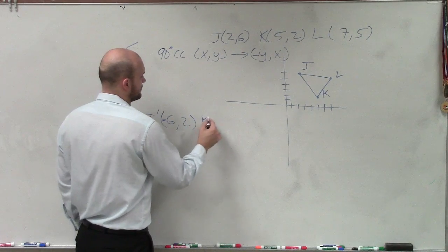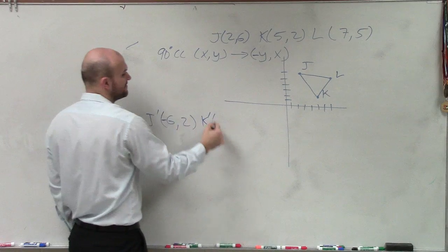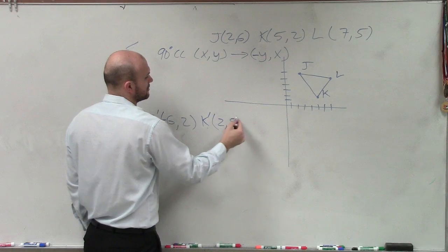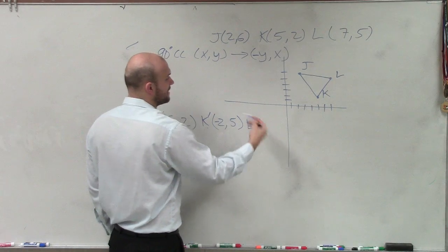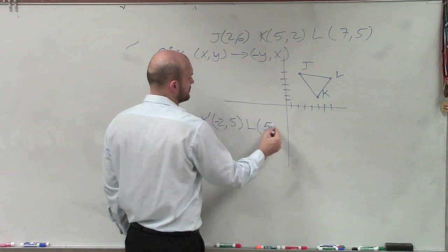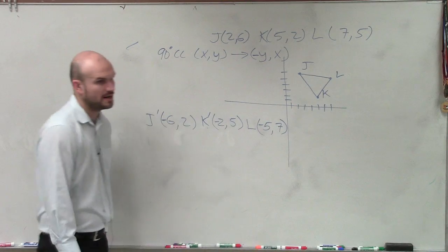For K prime, I swap the 5 and the 2 and I make the 2 negative. And for L prime, I swap the 5 and the 7 and I make the 5 negative.